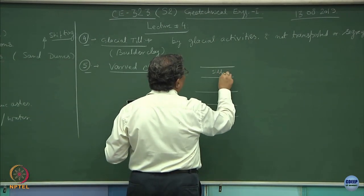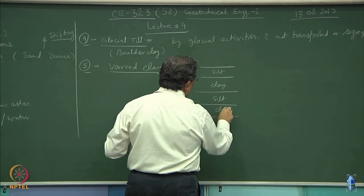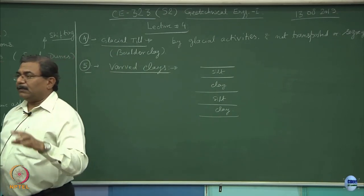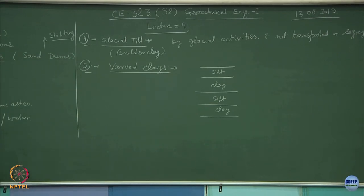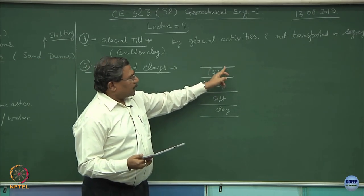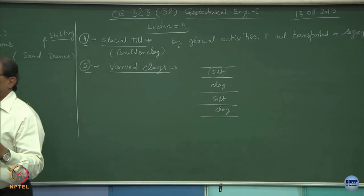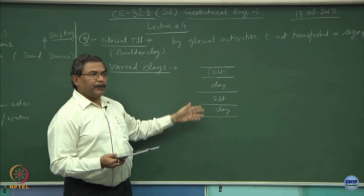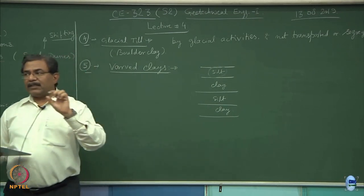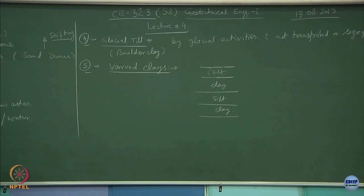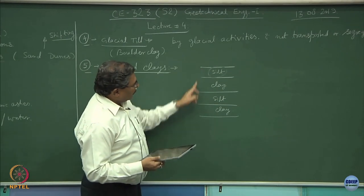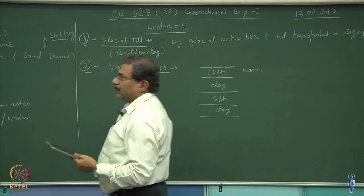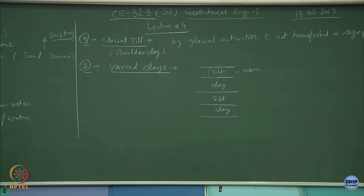Silt, clay, and boulders are nothing but the sizes of soil particles — types of soils depending upon their physical attributes, nothing more. Whenever there is warm weather, silt gets deposited; whenever there is cold weather, clay gets deposited. So every six months, when the weather changes, the deposition pattern also changes — these are basically alternate deposits. The thickness of these deposits could be substantial, even a few tens of meters.